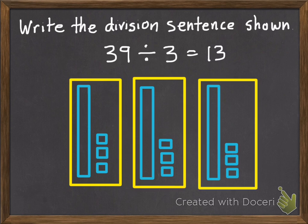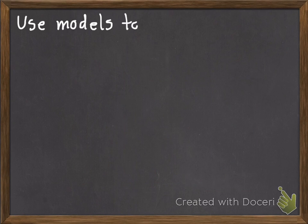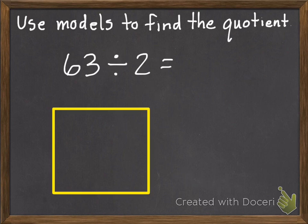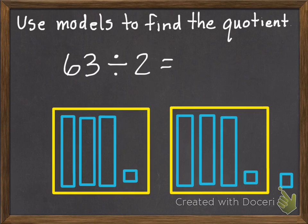Second practice problem. Here you need to use models to find the quotient, and your problem is 63 divided by 2. Go ahead and pause. Okay. This is what it should look like, and your quotient is 31 remainder 1.